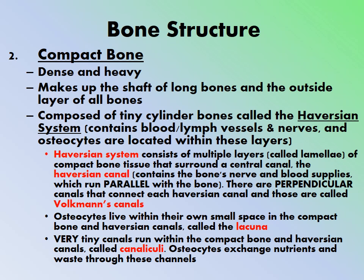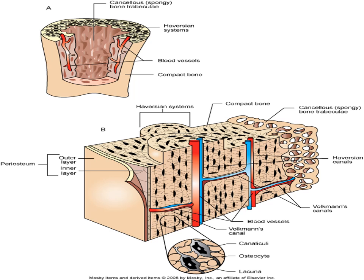Osteocytes live within their own small spaces in the compact bone and Haversian canals called lacunae. Very tiny canals called canaliculi run within the compact bone and Haversian canals, and osteocytes exchange nutrients and waste through these canaliculi channels.